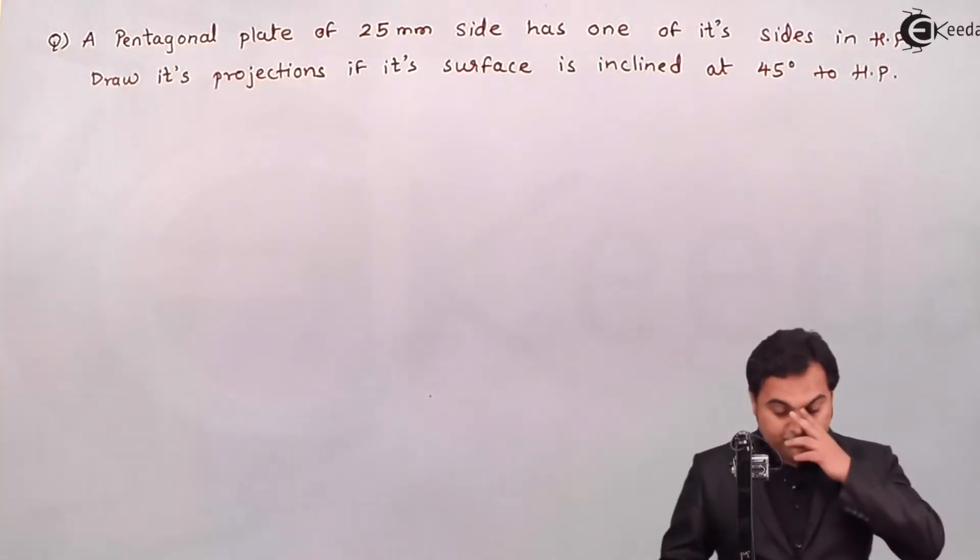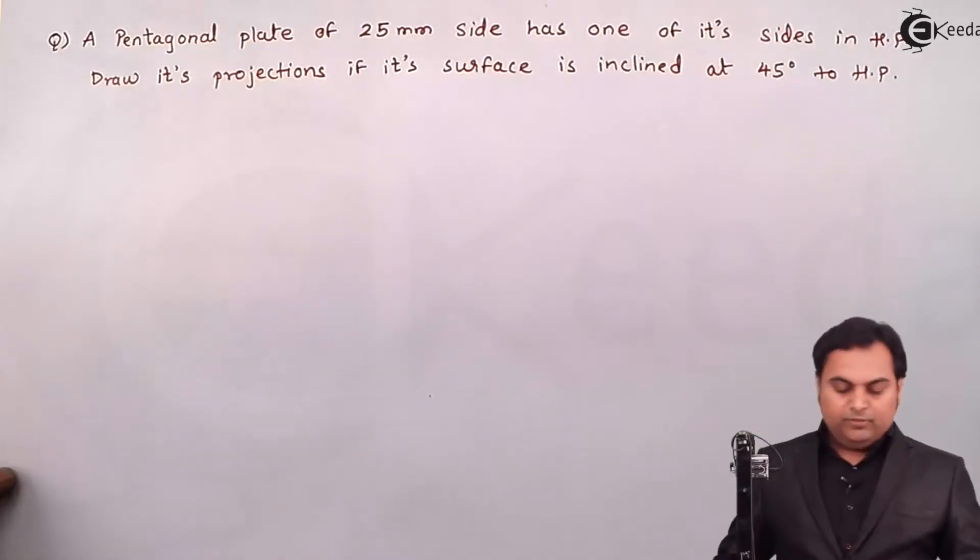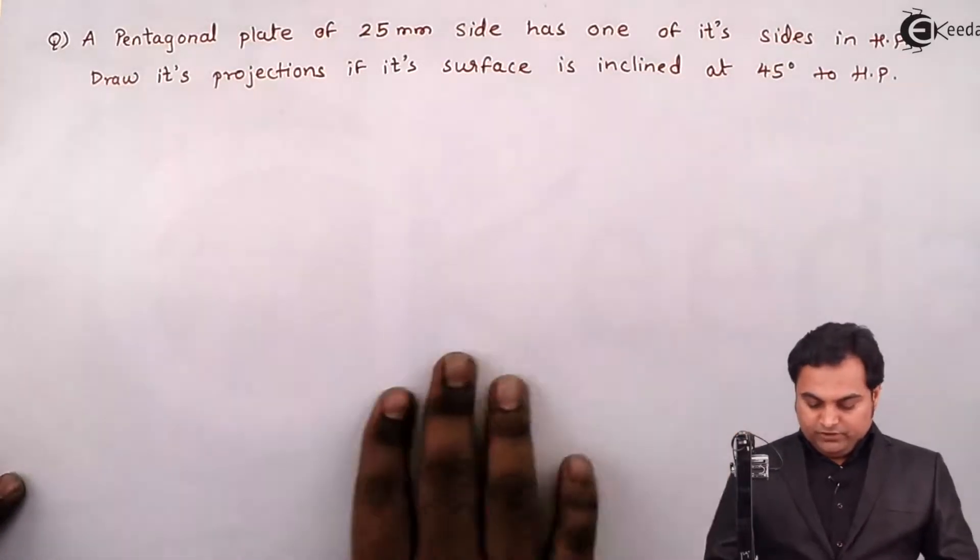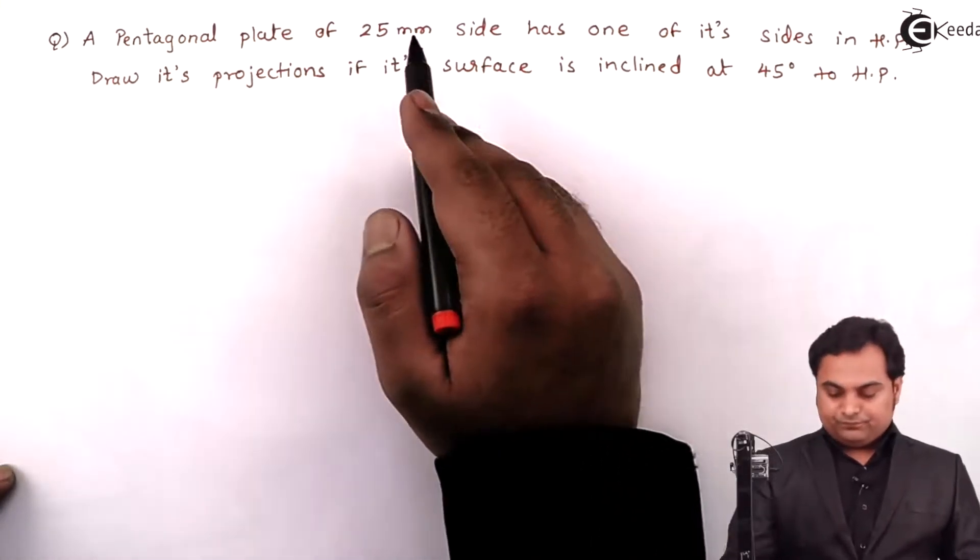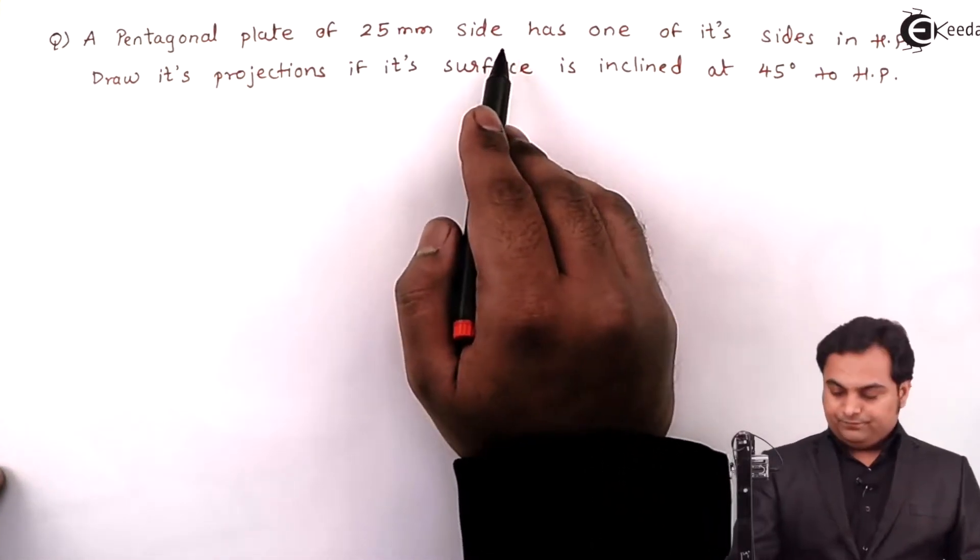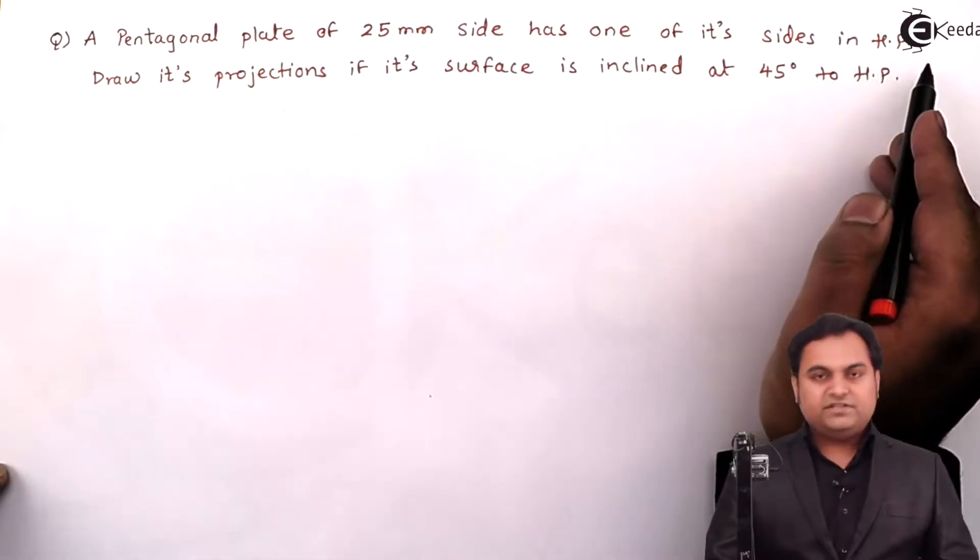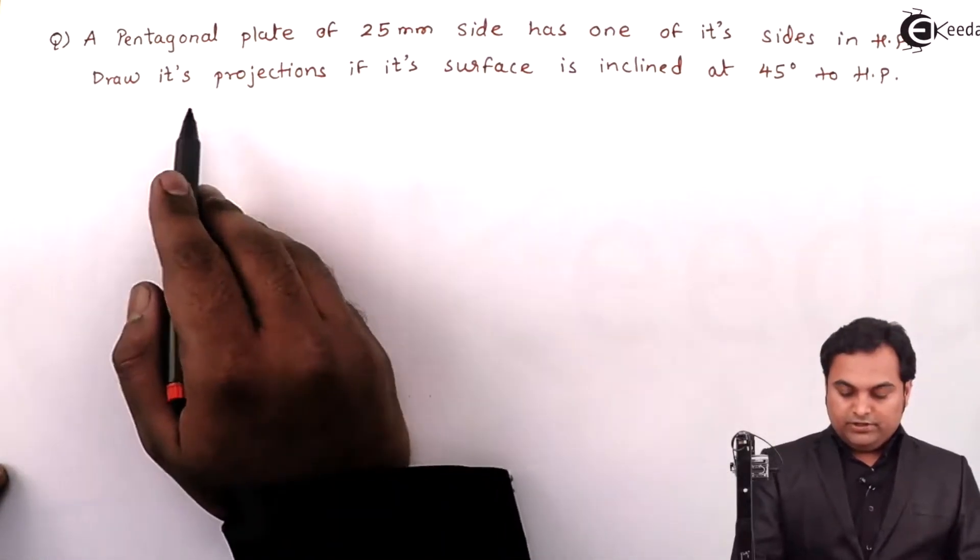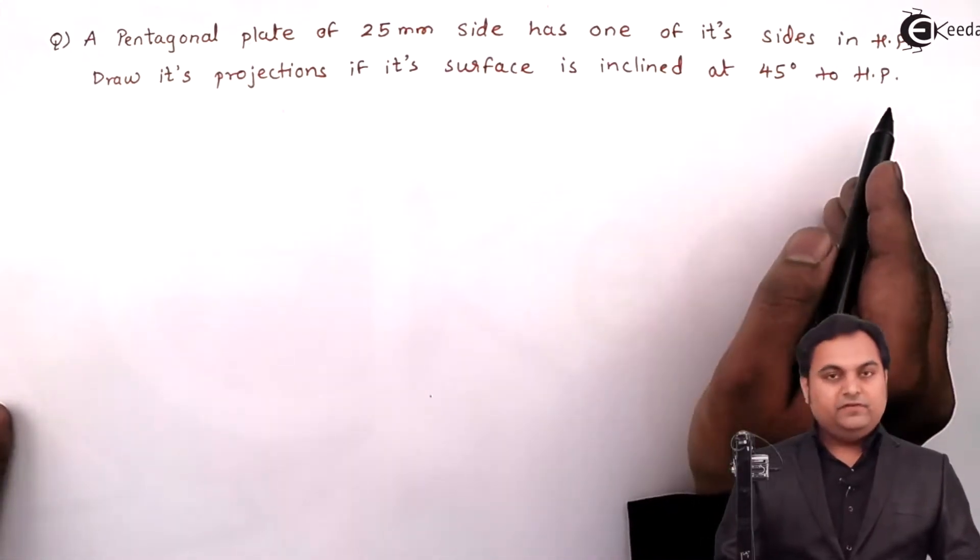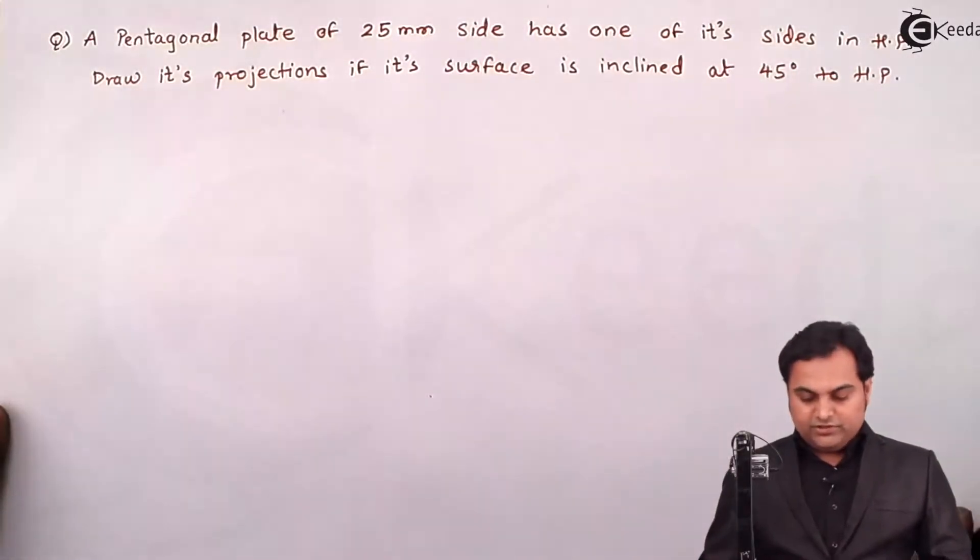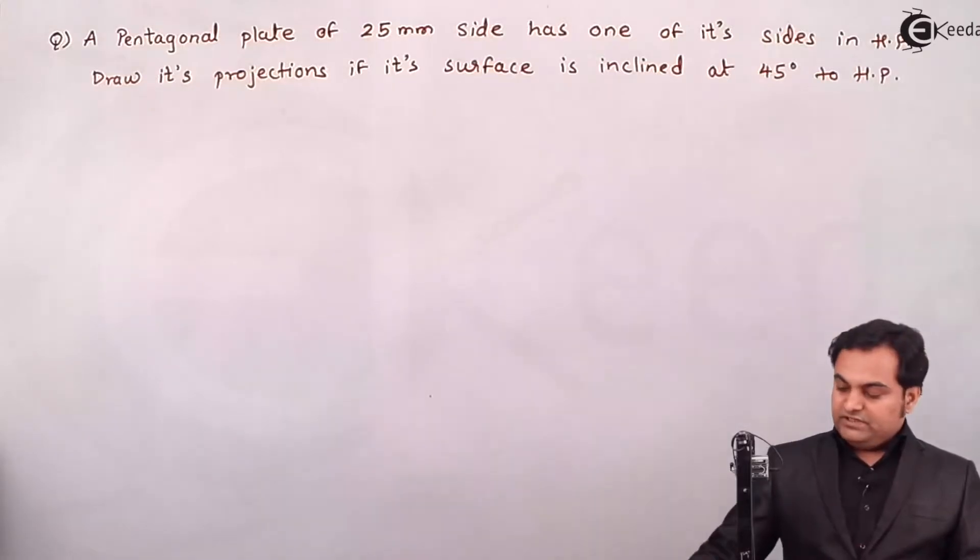Hello friends, here in this video we'll see a problem on projection of plane. The question is: a pentagonal plate of 25mm side has one of its sides in HP. Draw its projections if its surface is inclined at 45 degrees to HP. This is the question in front of us, now let us get started with the solution part.